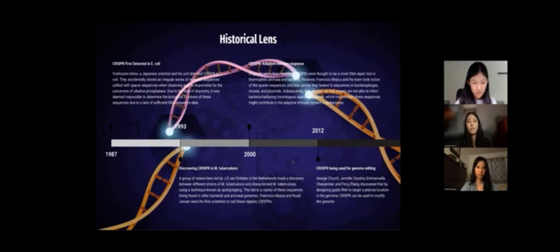In 2012, CRISPR was being used for genome editing. A group of four, George Church, Jennifer Doudna, Emmanuel Charpentier, and Feng Zhang, discovered that by designing guide RNA to target a precise location in the genome, CRISPR can be used to modify the genome.